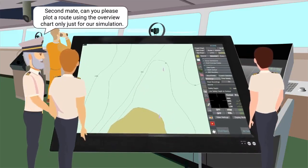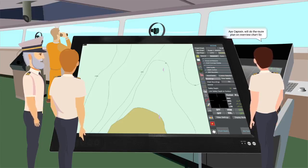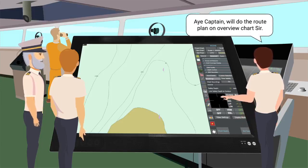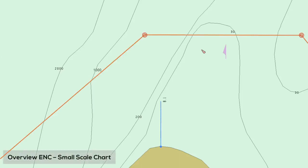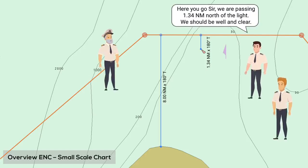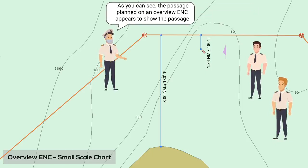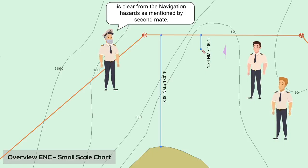Second mate, can you please plot a route using the overview chart only, just for our simulation? Aye, Captain. We'll do the route plan on an overview chart, sir. Here you go, sir. We are passing 1.34 nautical miles north of the light. We should be well and clear. As you can see, the passage planned on an overview ENC appears to show the passage clear from navigation hazards, as mentioned by second mate.